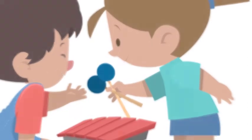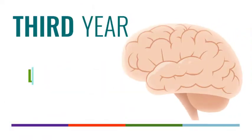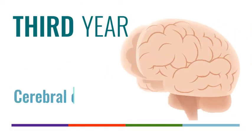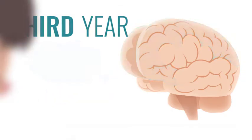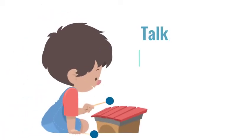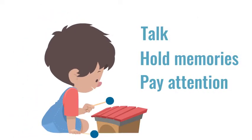Little one can learn to get along with others more in the third year, as the limbic system connects with the cerebral cortex, or thinking brain. The cerebral cortex helps little one talk, hold memories and pay attention longer.